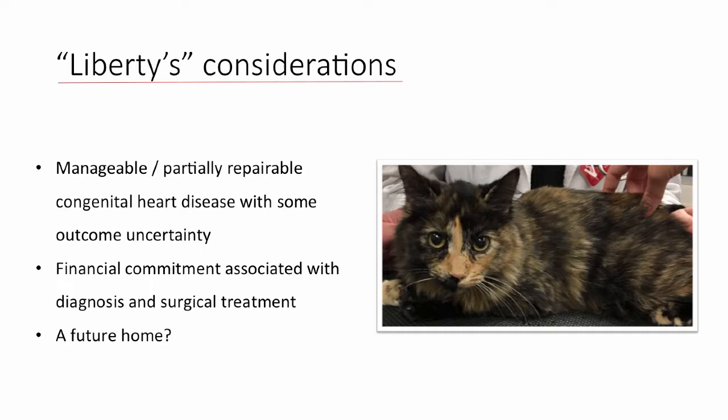Regarding murmur characteristics for VSD: the murmur is typically loudest on the right side — you may hear it on the left, but it will be loudest on the right. PDA is up at the left base and is a continuous murmur. Interestingly, studies have reported that cats with PDA don't always have continuous murmurs like dogs do — only 50 to 60 percent have continuous murmurs, with a large percent reported to have systolic murmurs only. Cat heart rates are really fast, making it hard to appreciate the continuous component, but a loud continuous murmur at the left base in either a dog or cat is probably 98 percent likely to be a PDA.